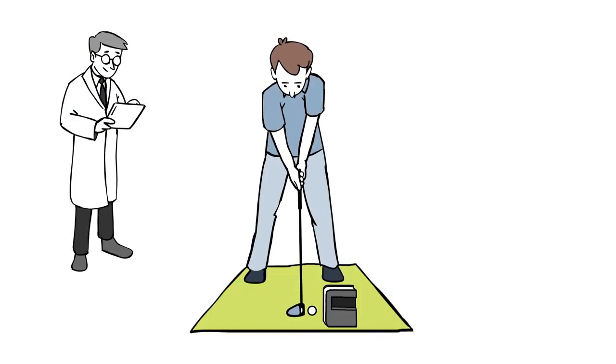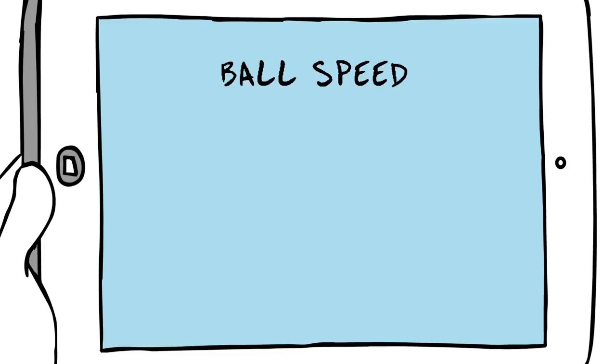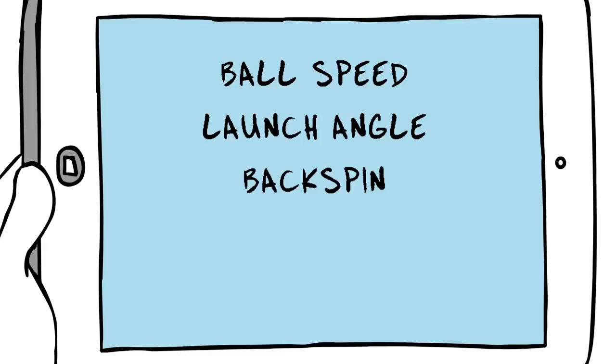With SkyTrack's accurate and reliable golf ball measurements, the following data parameters are captured for every shot: ball speed, launch angle, backspin, sidespin, and side angle.